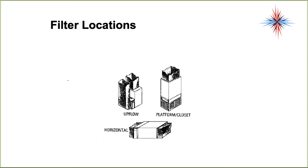Different filter locations exist depending on the system type. On an upflow furnace, there's a filter grill right next to the furnace between it and the ductwork. On a platform or closet system, the return grills are on the bottom and the filter is right above them. On a horizontal system, the filter is slid into one side of the unit near the unit, or mounted in the register grills in the house.